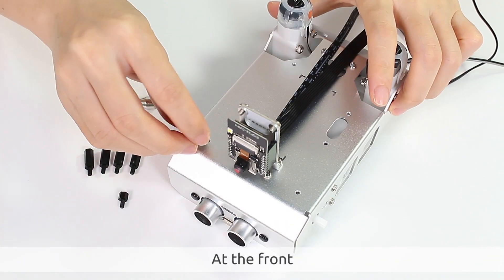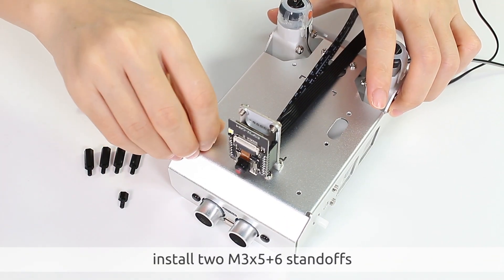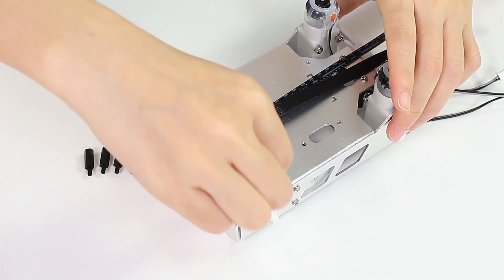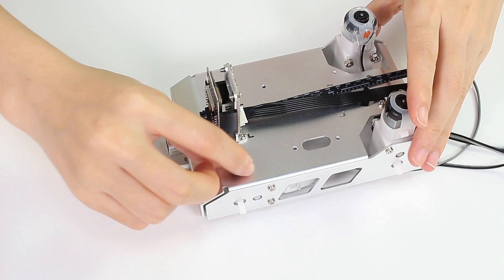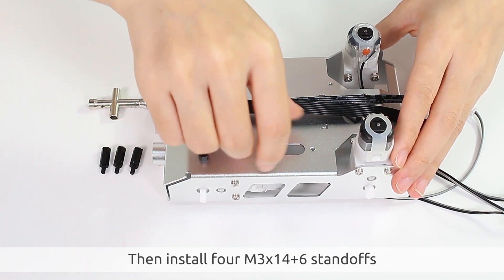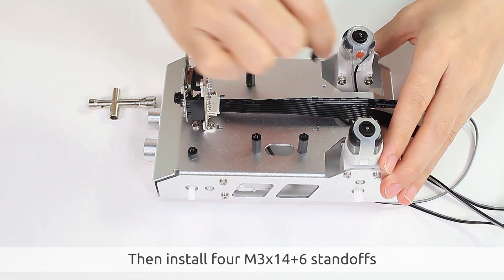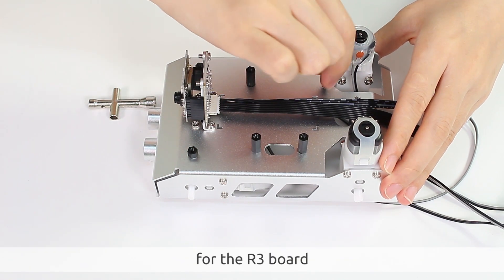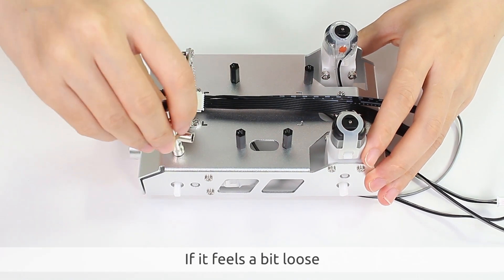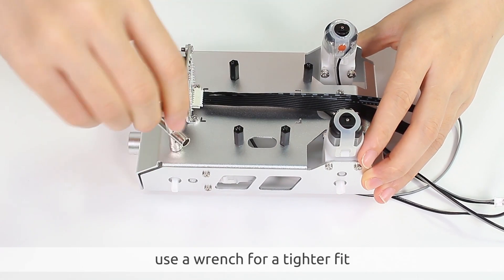At the front, install M3 x 5 plus 6 standoffs for obstacle avoidance modules. Then install four M3 x 4 plus 6 standoffs for the R3 board. If it feels a bit loose, use a wrench for a tighter fit.